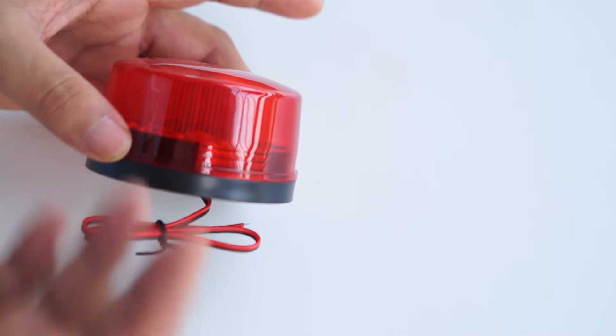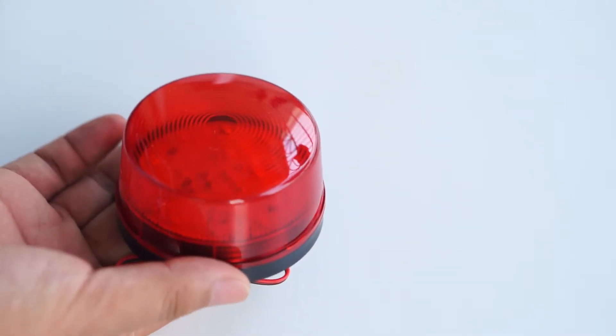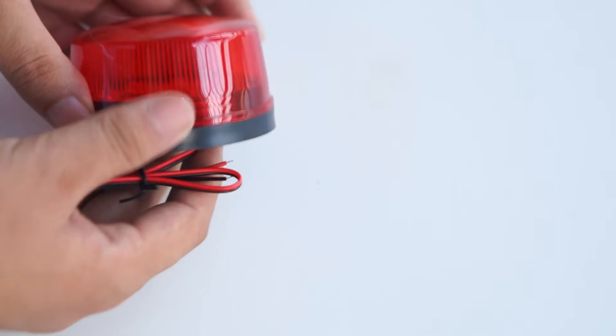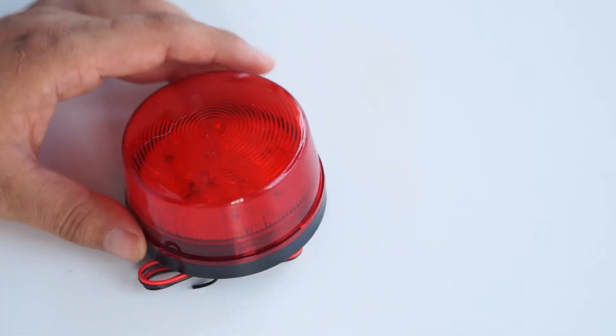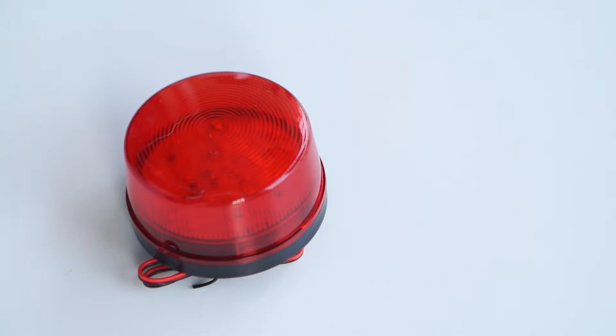This is a 12V DC strobe light which can work with the fire alarm system and the burglar alarm system. So when the alarm is triggered, the strobe light will keep flashing to alert a lot of people.